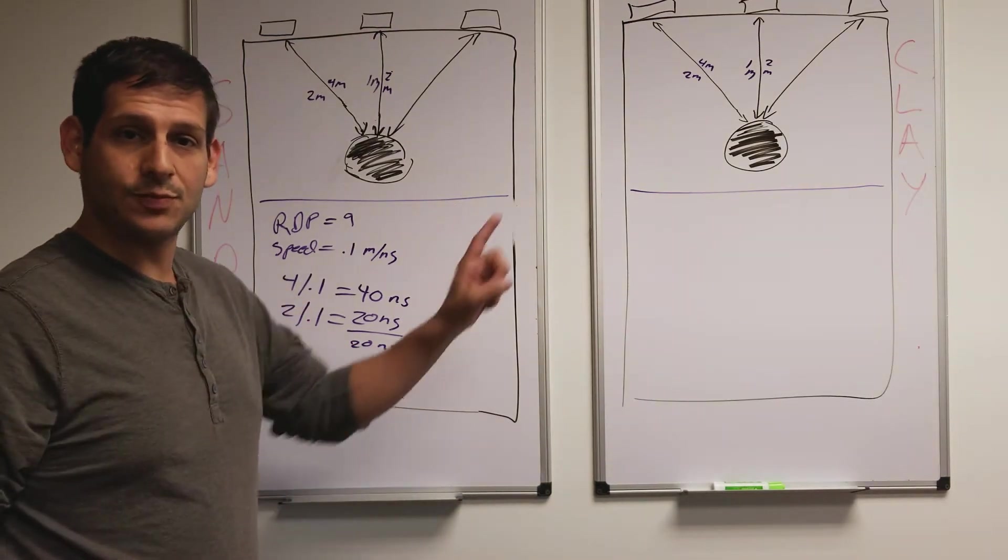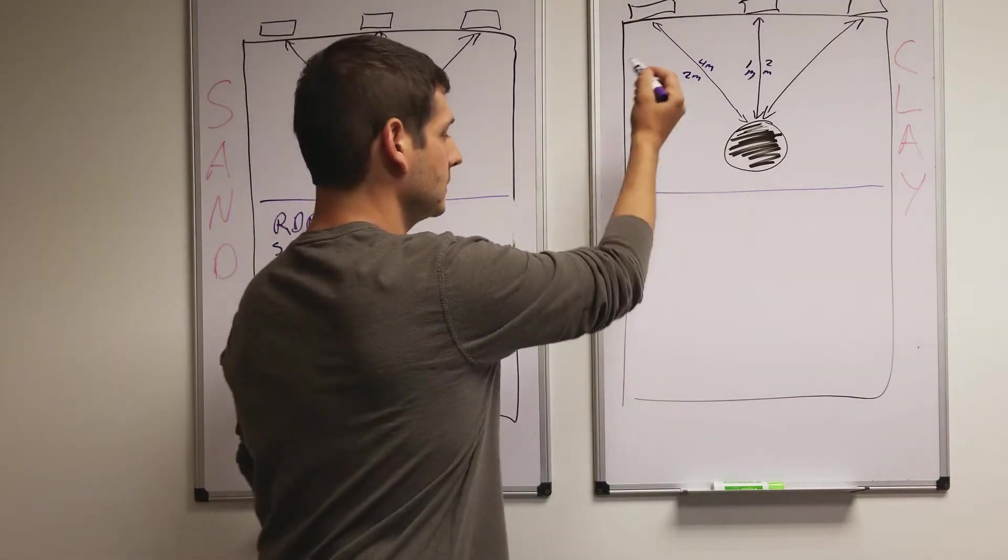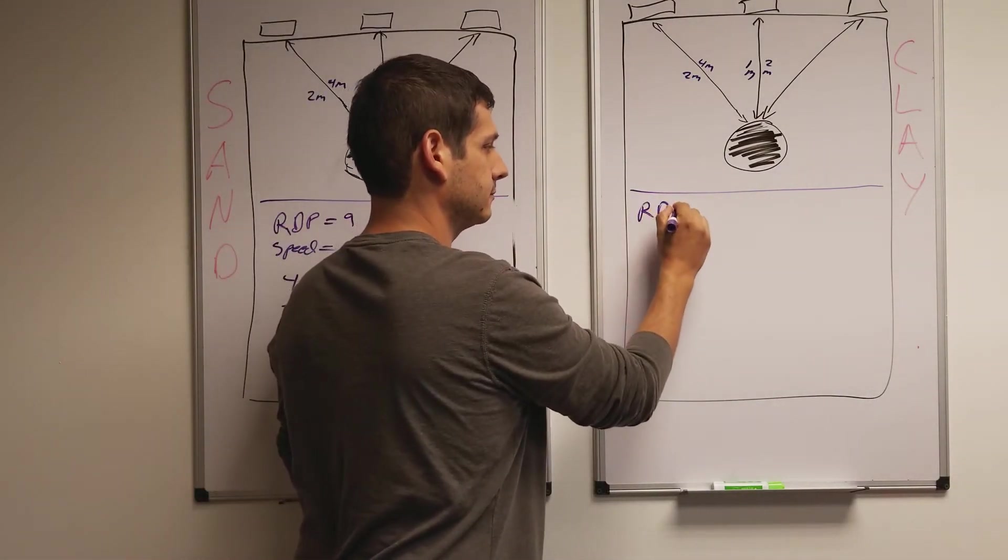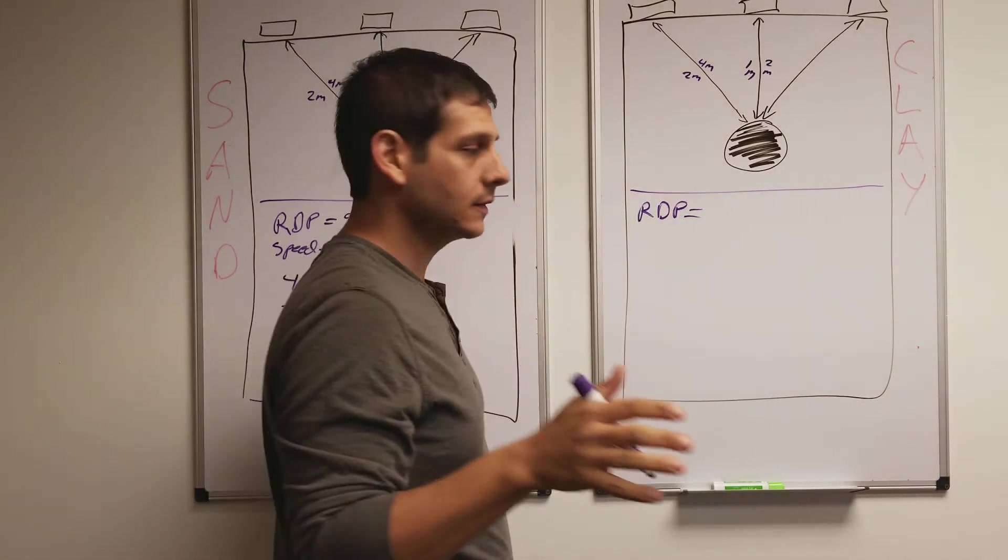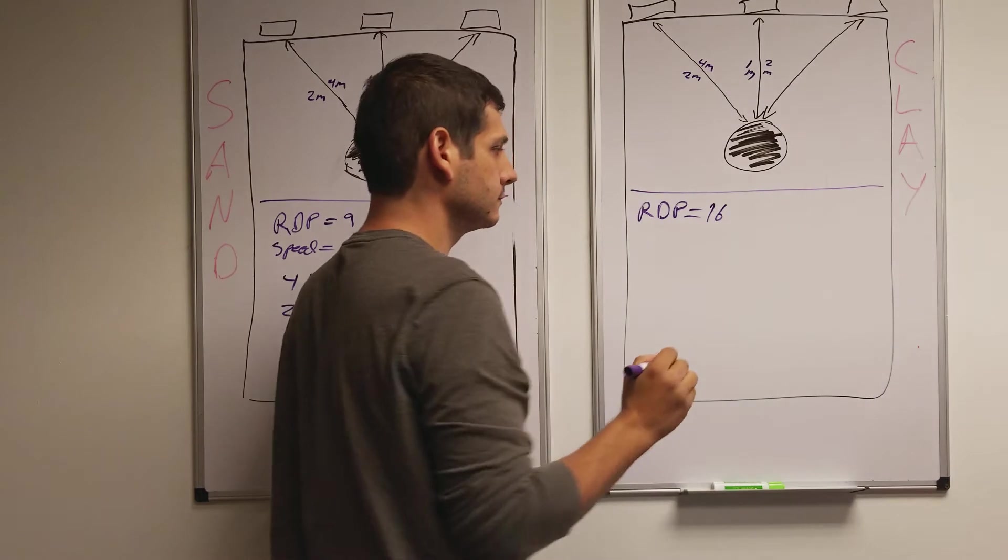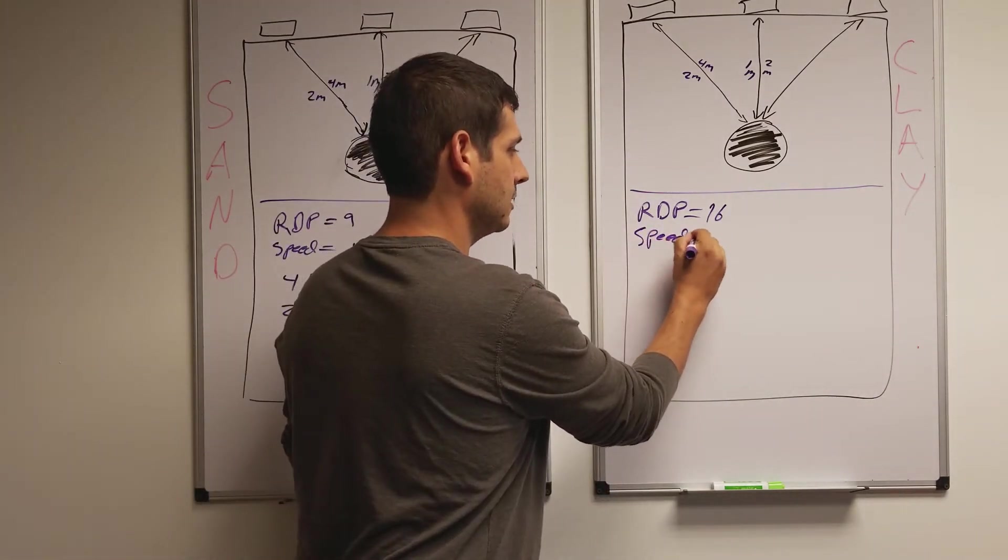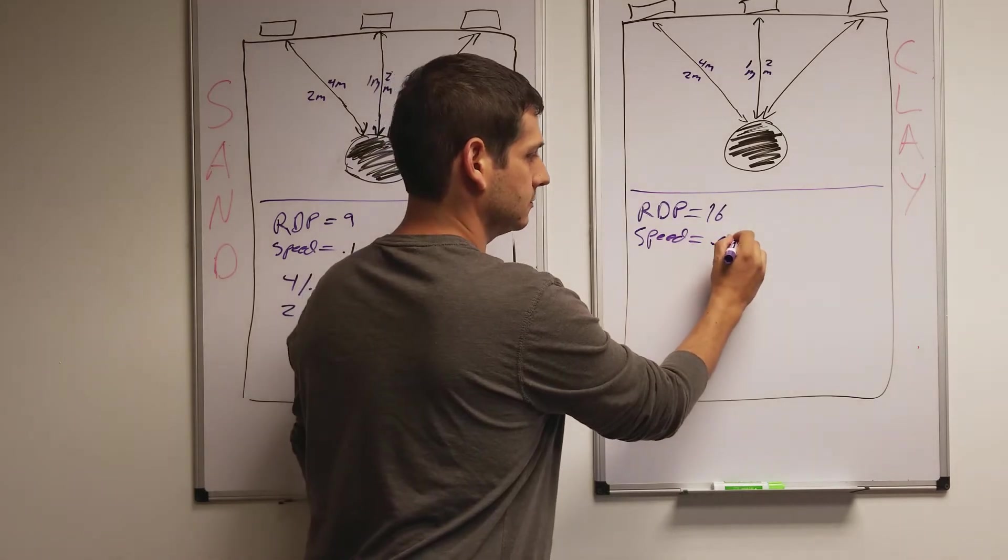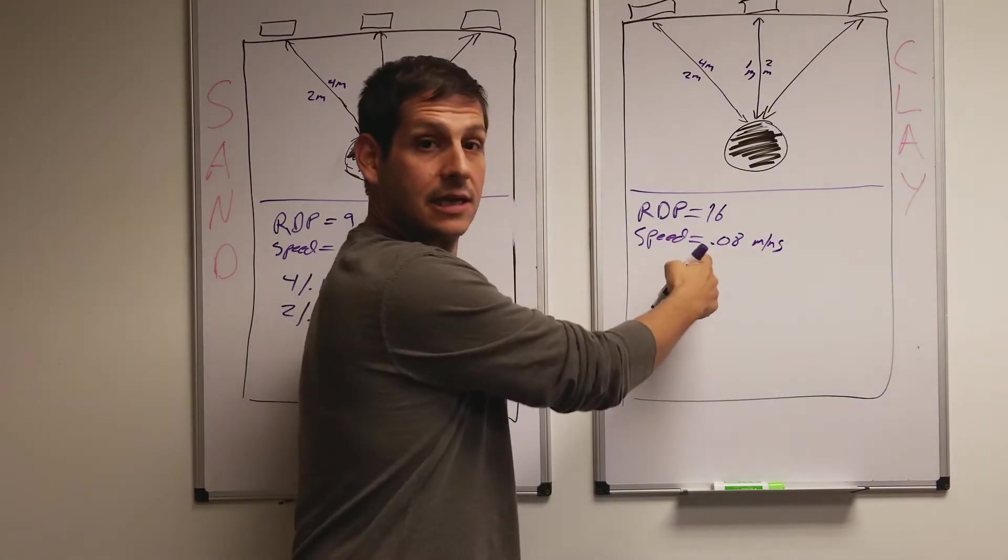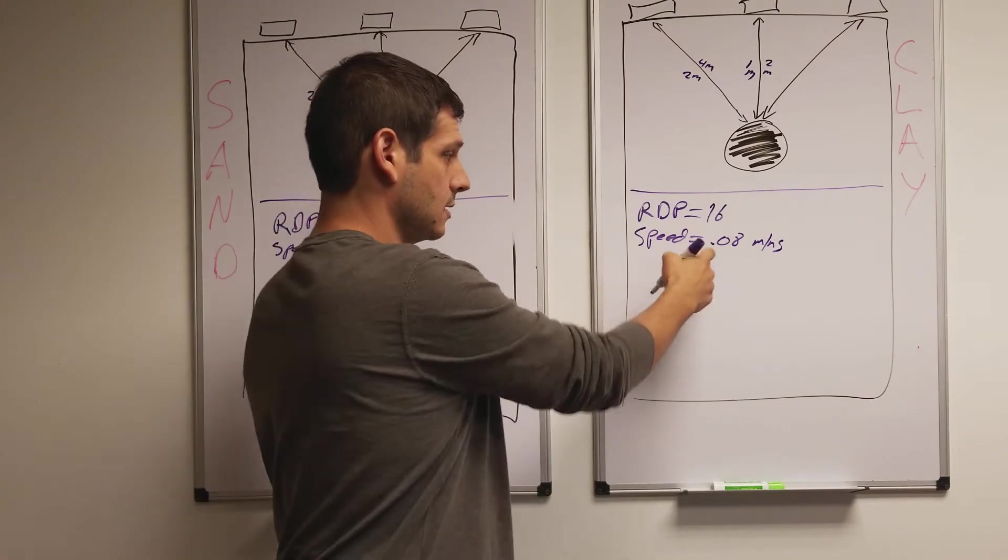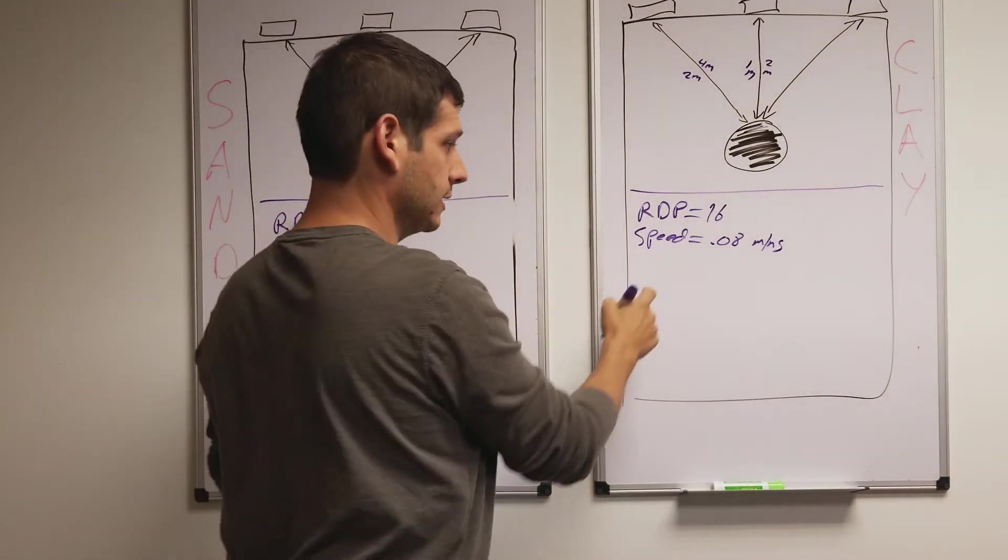Now, let's jump over to our clay example. An RDP, let's say it's moist clay, it's going to be about 16. So, if it's about 16, the speed will equal about 0.08 meters per nanosecond, which is 8 centimeters per nanosecond. 8 centimeters per nanosecond, 10 centimeters, moving fast over here, then over here.